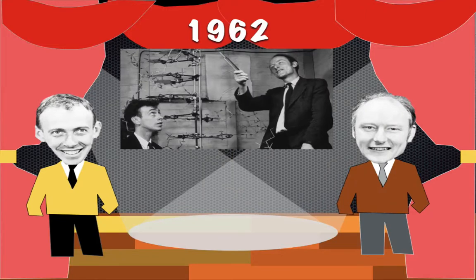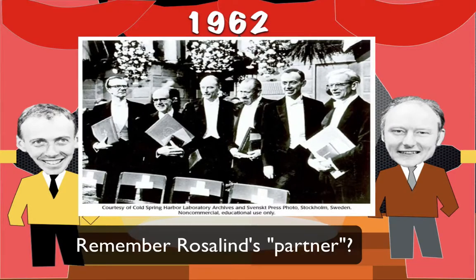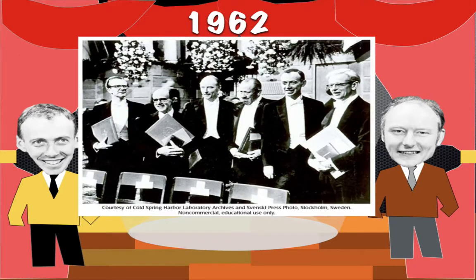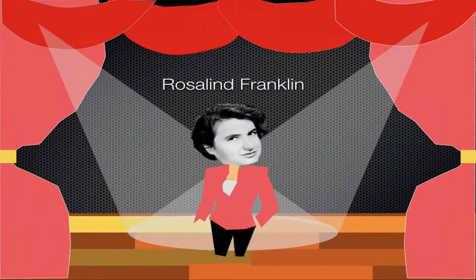Pretty interesting. With this information, Watson and Crick were able to win the Nobel Prize in 1962, along with one of Rosalind Franklin's research colleagues. Watson and Crick were able to get a lot of the information they used from Rosalind Franklin — not directly, because they actually didn't have her permission to use her research. Her research was handed over to them without her permission.